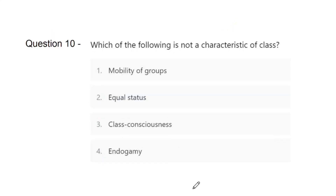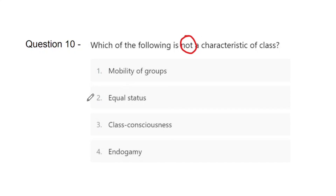Question 10: Which of the following is not a characteristic of class? Options: mobility of groups, equal status, class consciousness, and endogamy. Think carefully — what is something that absolutely does not exist in class? The correct answer is B, that is equal status. Classes are of different kinds — lower class, middle class, upper middle, lower middle — so they don't have equal status.